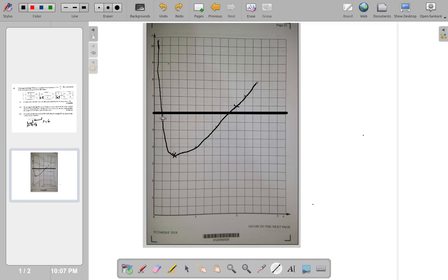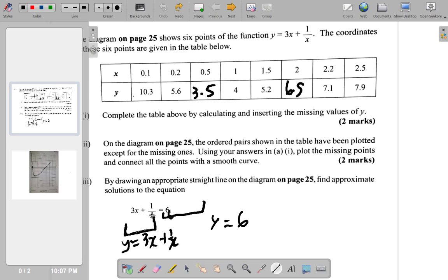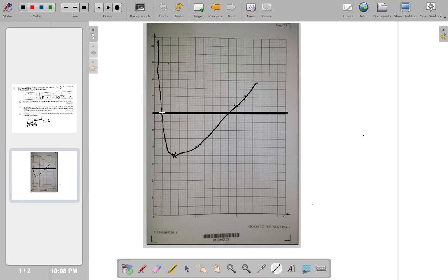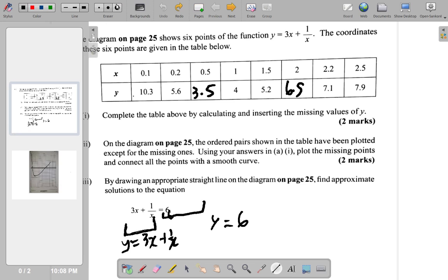So, this is y equals 6. What you're really saying is, 3x plus 1 over x, the curve, is equal to 6, the line. Where are they equal? They are equal where they intersect.